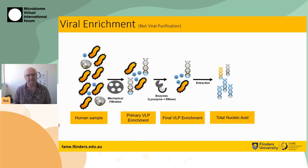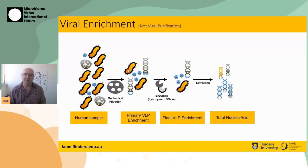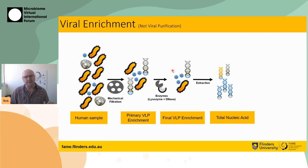We start with, for example, a human fecal sample, and we might do some filtration that gets rid of a lot of the bacteria. But we're not getting rid of everything. Remember that there are small bacteria almost as small as viruses, and there are large viruses almost as big as some bacteria. So depending exactly how you do these filtration steps, what comes through will vary. We do some enzyme digestions — we might remove bacteria with lysozyme or remove free DNA with DNase — and then we get our total nucleic acid extractions.